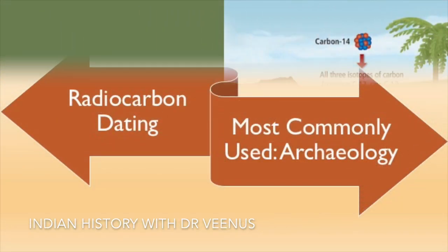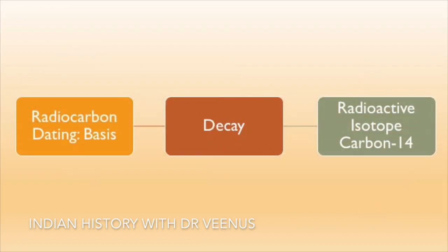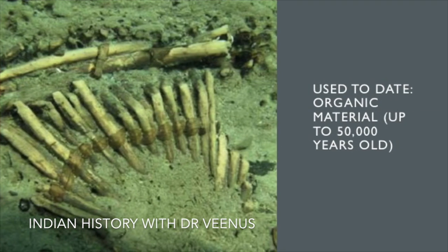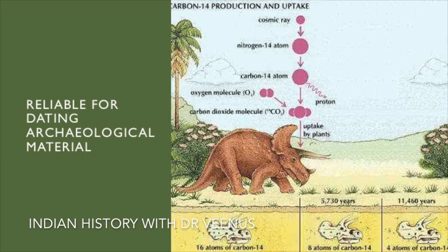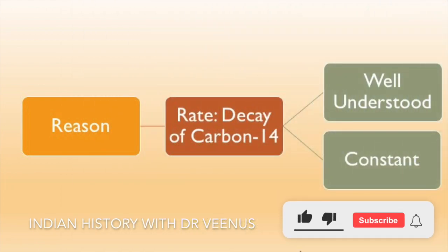Radiocarbon dating is the most commonly used absolute dating method in archaeology. It is based on the decay of the radioactive isotope carbon-14. This method can be used to date organic materials up to 50,000 years old, such as bone, charcoal and plant remains. Radiocarbon dating is a reliable method because the rate of decay of carbon-14 is well understood and constant.